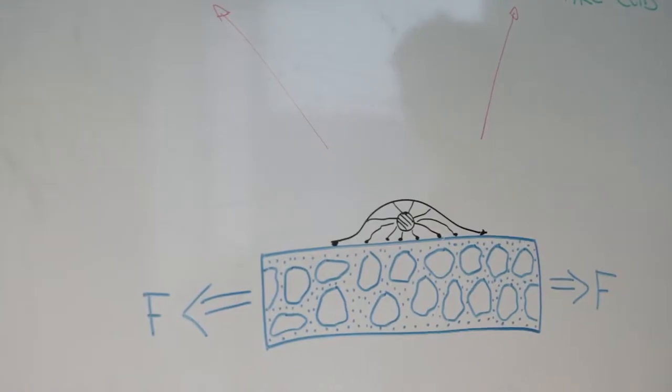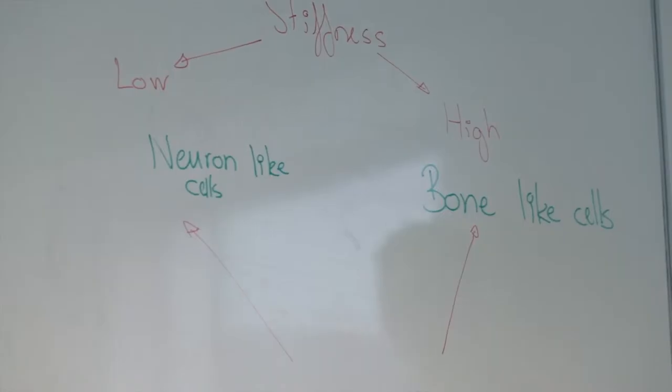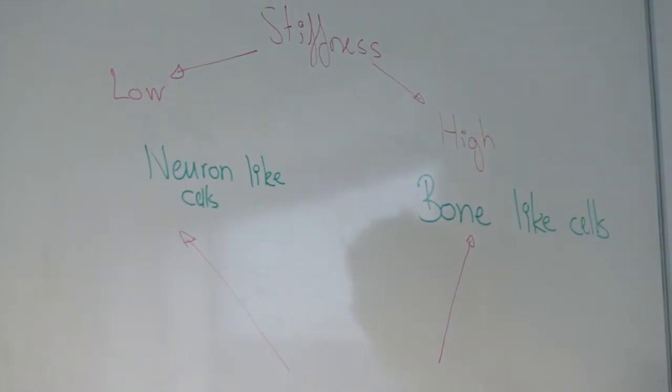This technology might be disruptive if we can understand how cells and materials interact. We can exploit how cells build tissues and how cells build new materials. This will open up new possibilities for us to engineer new materials.